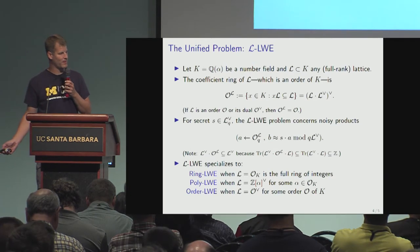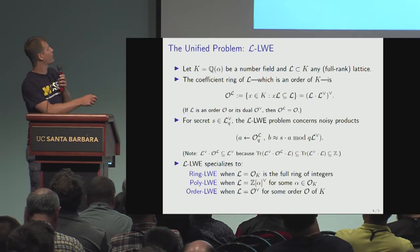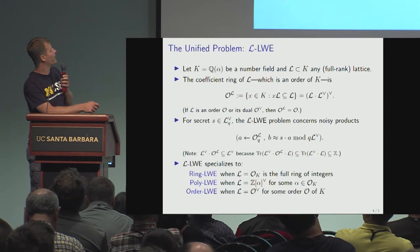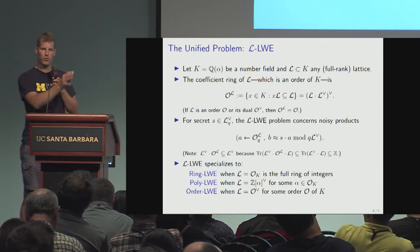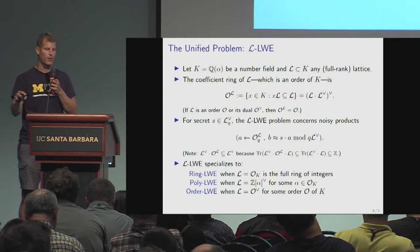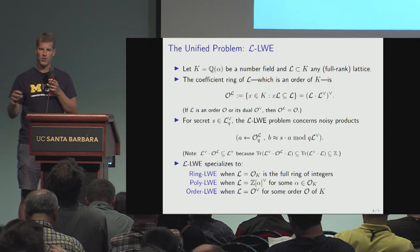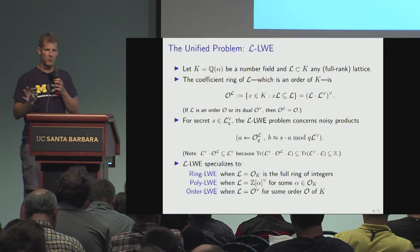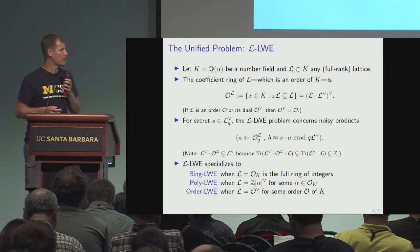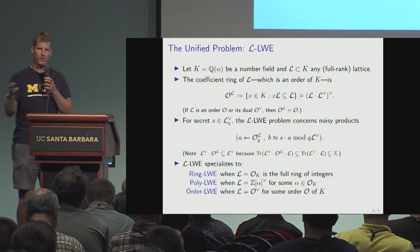There are a couple theorems. One theorem is that for any order and suborder, you can reduce from the order to a suborder. The error doesn't change—nothing changes. It's like a half-page proof that just uses a natural bijection between the order and the suborder mod Q.